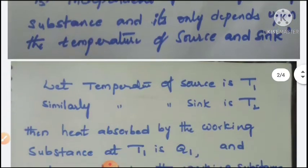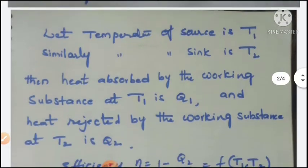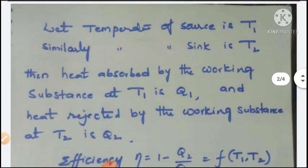Let us consider that the temperature of the source is T1 and the temperature of the sink is T2. Then, heat absorbed by the working substance at T1 is Q1 and heat rejected by the working substance at T2 is Q2.